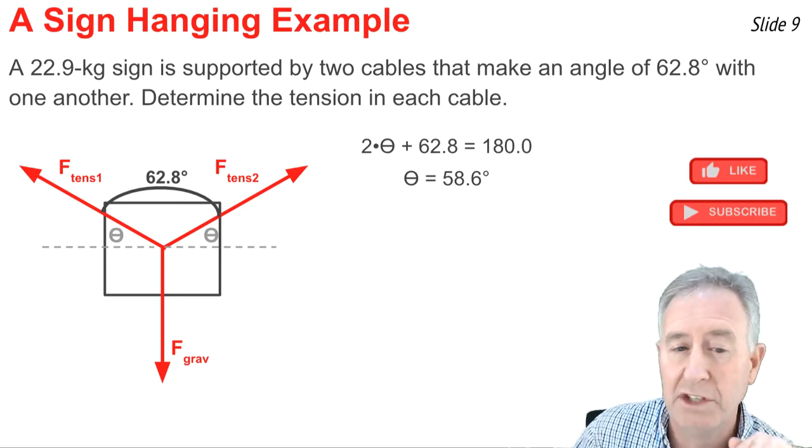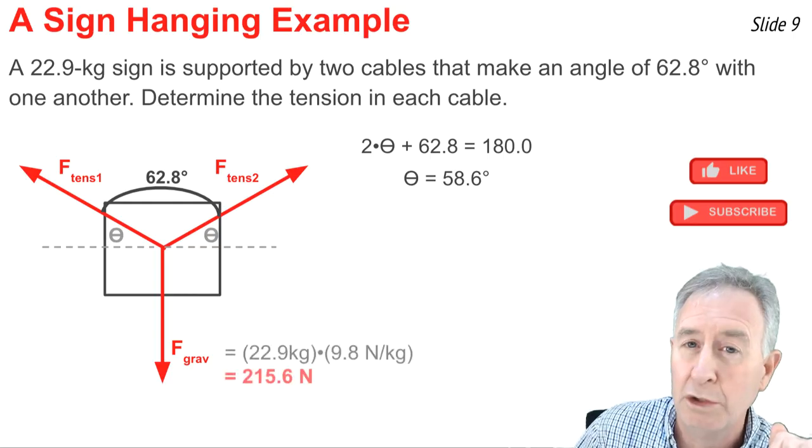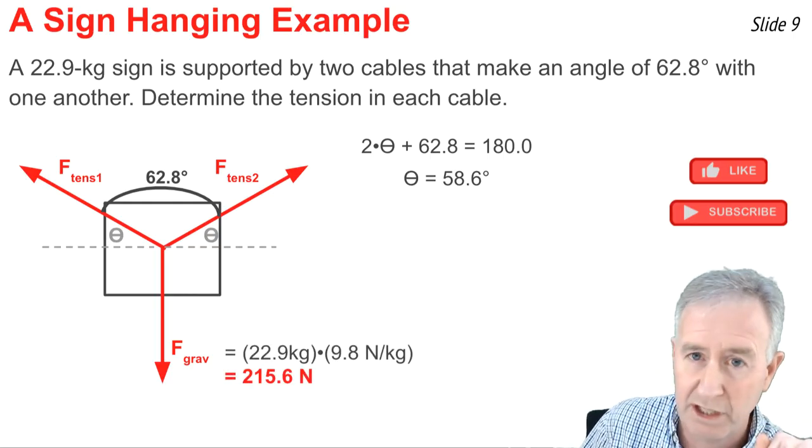Now, I can take the mass of the sign, 22.9 newtons, and multiply by 9.8 newtons per kilogram. And I can get the weight of the sign, or the downforce of gravity.